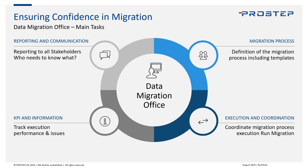On the lower right, you find execution and coordination. When going into the actual migration — whether a rehearsal or a productive migration — these migrations need to be executed and coordinated by the data migration office. That doesn't mean the data migration office performs all button presses; it just needs to be aware of who needs to do the next thing in the pipeline to ensure it runs smoothly. We at ProStep always show this to the customer and discuss how the data migration office needs to be staffed for a smooth transition in the data migration project.